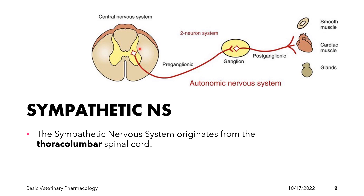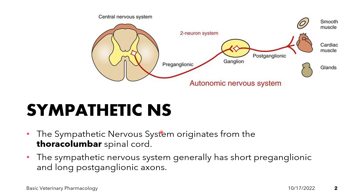The cell body of the pre-ganglionic neuron and its axon terminate at the ganglia. Ganglia are a group of nerve cell bodies outside the central nervous system. There is a synapse — a small gap — between the axon terminal and the post-ganglionic neuron, which contains dendrites and a cell body. The axon of the post-ganglionic neuron terminates at the synapse, and this connects to the effector organ.